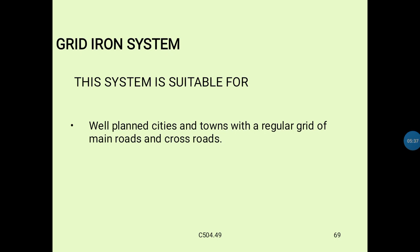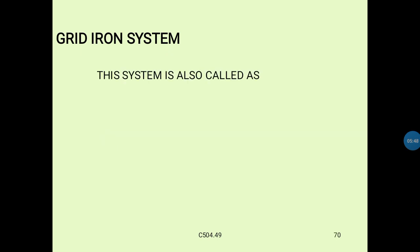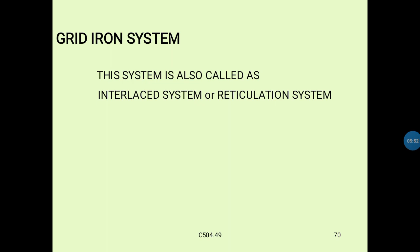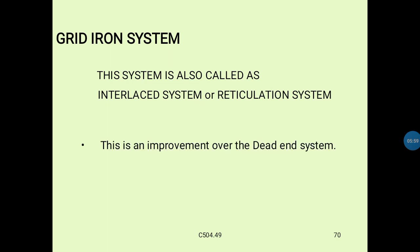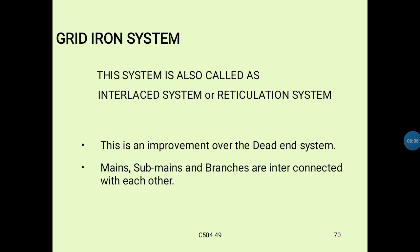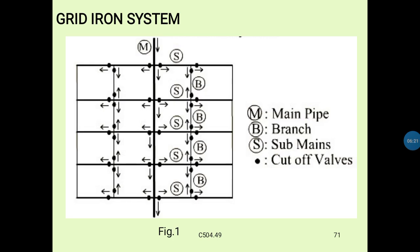Next, coming to the gridiron system. This system is suitable for well-planned cities and towns with a regular grid of main roads and crossroads. This system is also called the interlaced system or reticulation system. It is an improvement over the dead end system, where mains, sub-mains and branches are interconnected with each other.